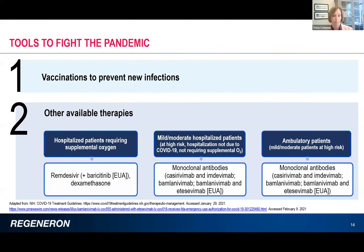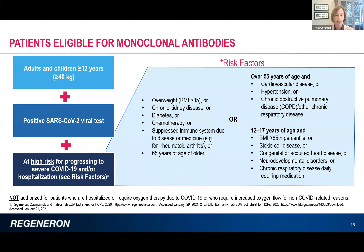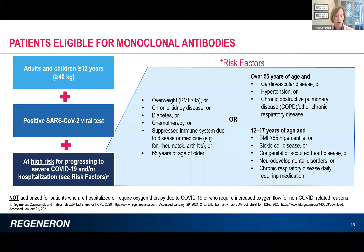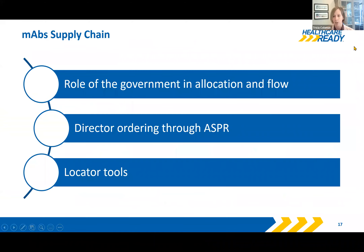The EUA is for adults and children 12 years of age and older, 40 kilograms or greater, with positive SARS-CoV-2 viral tests, and who are at high risk for progressing to severe COVID-19 or hospitalization. Risk factors include severe comorbid conditions such as obesity, diabetes, CKD, and suppressed immune system. Also considered high risk are those 55 years and older with cardiovascular disease, hypertension, or COPD. For those between 12 and 17, there is a separate list of risk factors that determine eligibility.